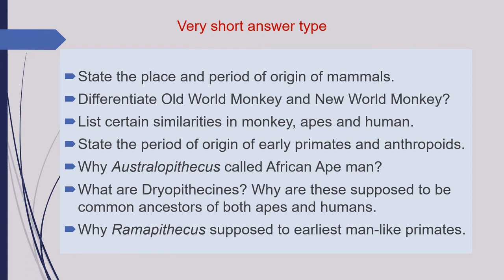These questions cover the first compulsory question of your paper. The first question of this category is: state the place and period of origin of mammals. Second question is: differentiate old world monkey and new world monkey. Third question is: list certain similarities in monkey, apes and human. Next is: state the period of origin of early primates and anthropoids. Next is: why is Australopithecus called African ape man?